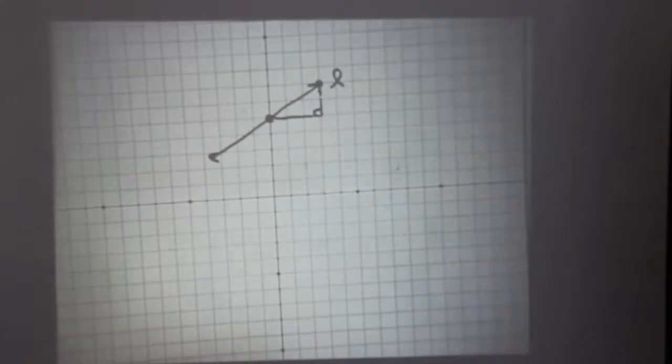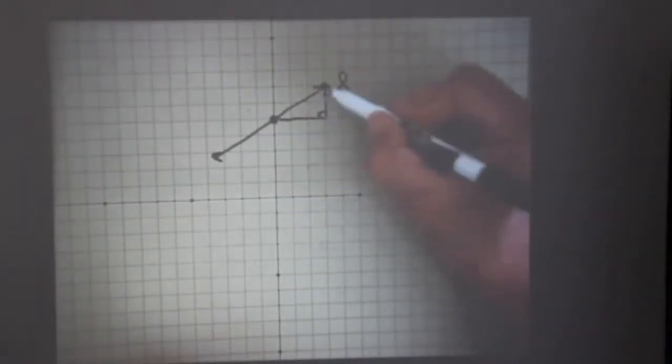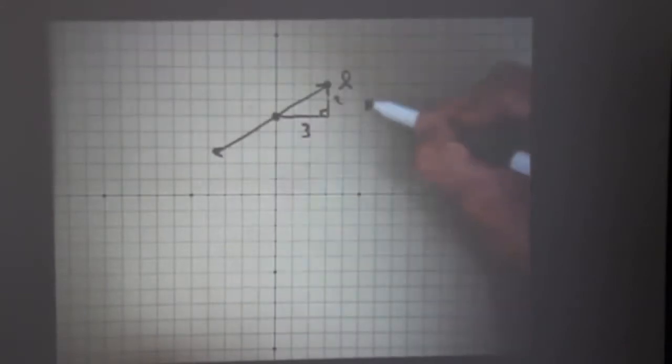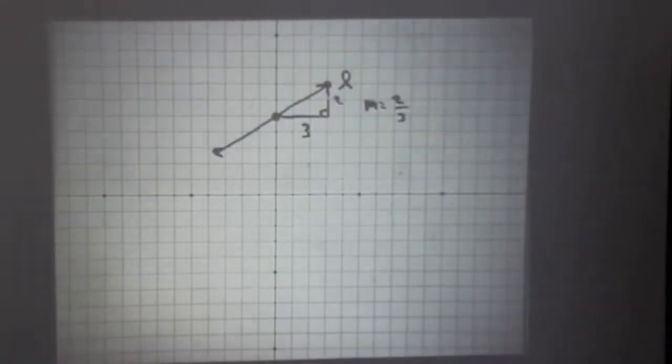And then from here I can calculate the slope of this line by looking. This is two units. This is three units. So therefore the slope is rise over run, two over three. The slope is two thirds.